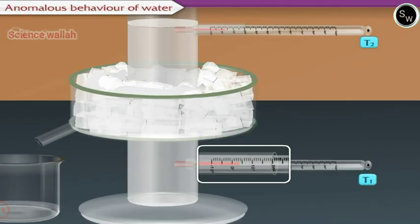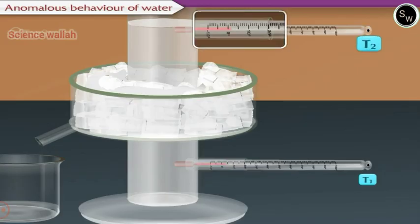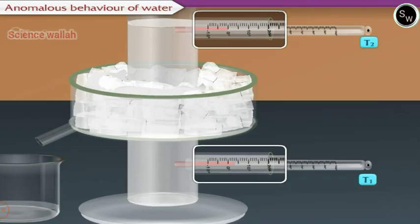The temperature of water in the upper part, i.e. T2, therefore decreases rapidly to 0 degrees Celsius. The temperature of water in the lower part, i.e. T1, however remains constant at 4 degrees Celsius for some time and then decreases slowly to 0 degrees Celsius.